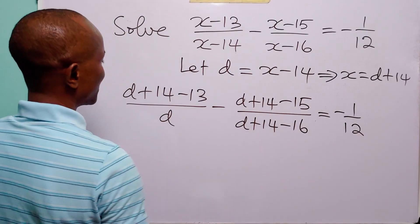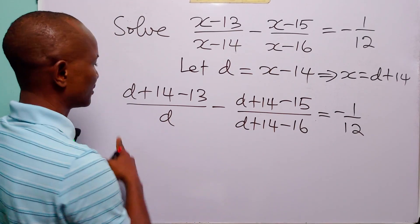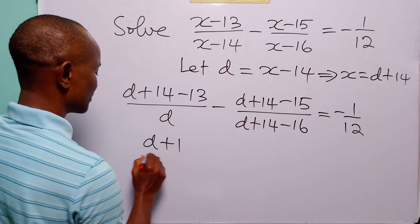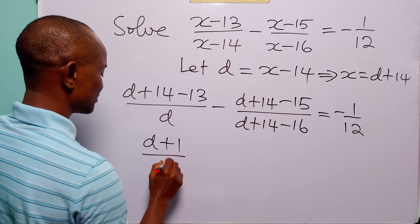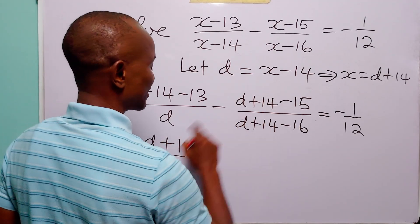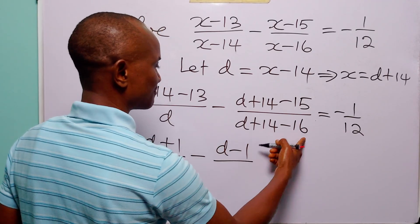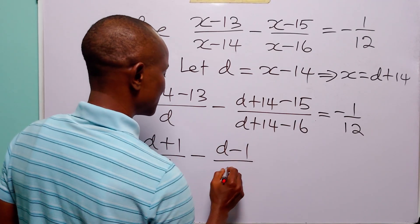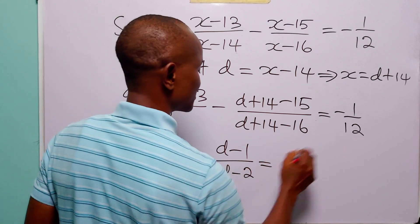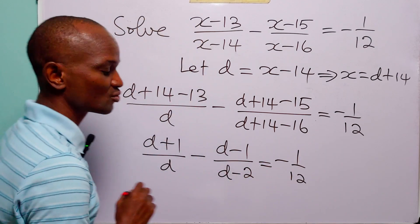Now simplifying: 14 minus 13 is 1, so we have d plus 1 over d. Then 14 minus 15 is minus 1, and 14 minus 16 is minus 2. So we have d plus 1 over d, minus d minus 1 over d minus 2, and this is still equal to minus 1 over 12.